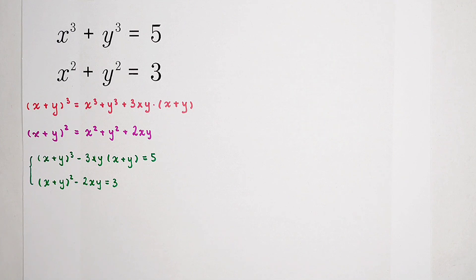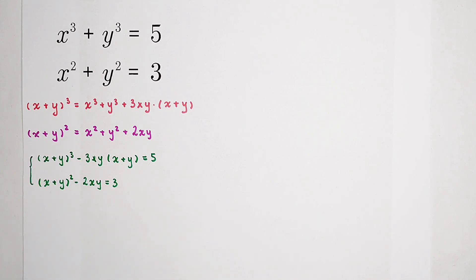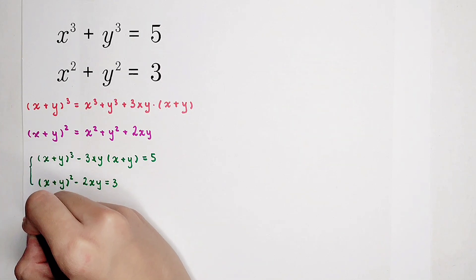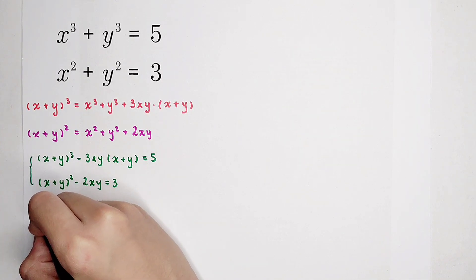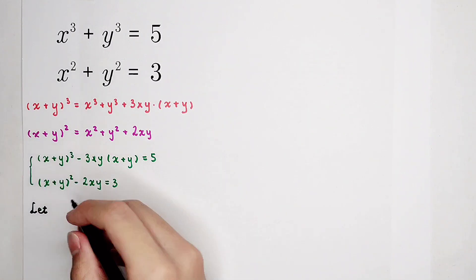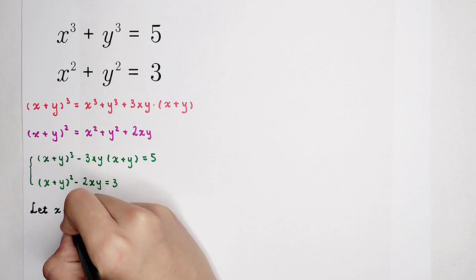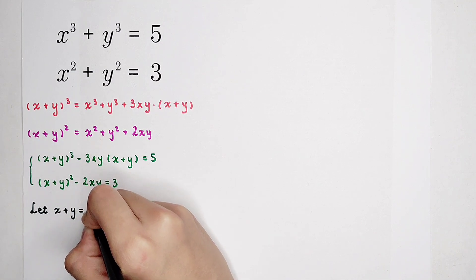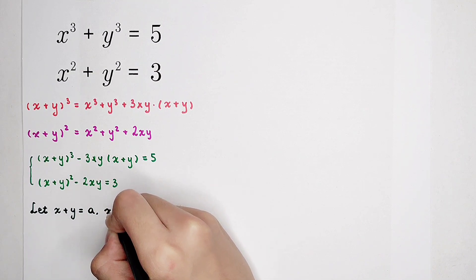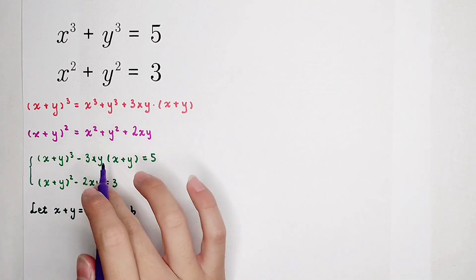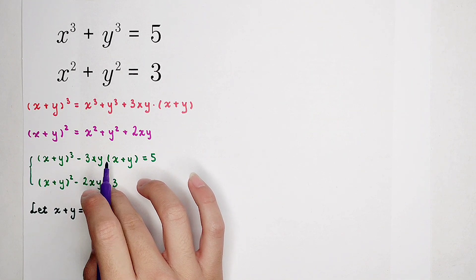Of course — substitution. This system of equations will change a lot. Let x plus y equal a, and the product of x and y equal b. These two equations will now turn into equations about a and b.